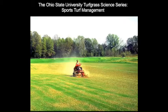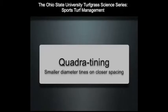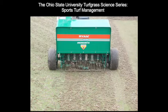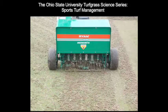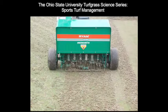Another version of the traditional coring method is to use smaller diameter tines — a quarter inch in diameter on closer spacing — called quadratining. Quadratining is often done during summer months to increase soil gas exchange with minimal disruption to the turf.